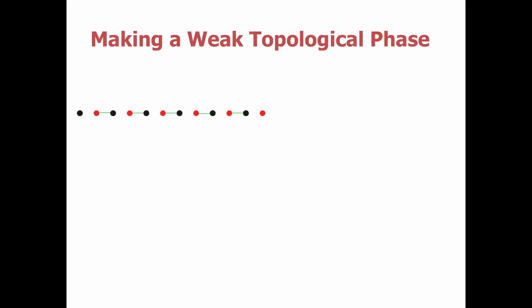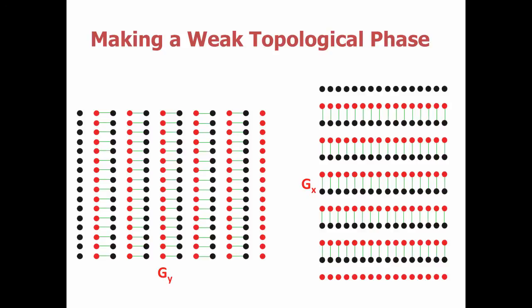There's something else interesting here. We could have stacked the wires in different directions — vertically or horizontally — and this shows again the anisotropy. These systems both have edge states, but they're on different sets of edges. When the wires are stacked vertically, only the left and right edges have low-energy bound states. When stacked horizontally, only the top and bottom have low-energy bound states. This indicates that the topological invariant describing these systems, called the weak index, will be anisotropic — instead of being a scalar, it will be a vector quantity, telling us exactly how the 1D wires are stacked into two dimensions.